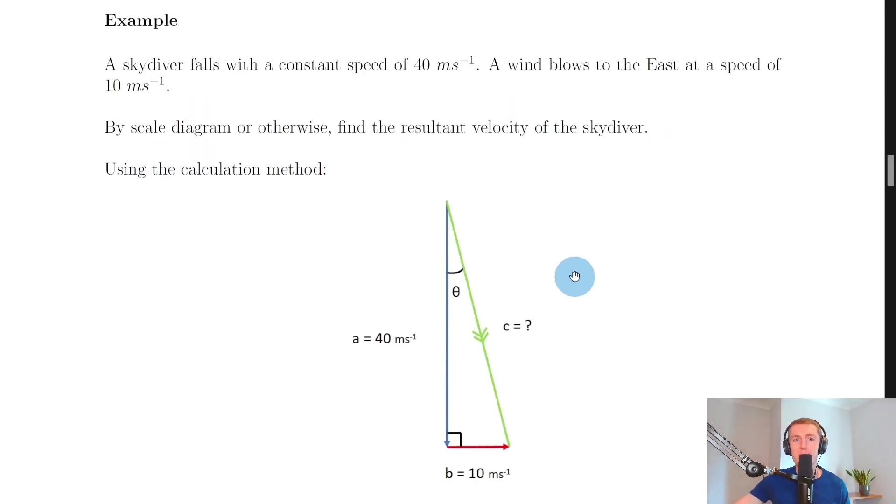So if we look at this example here it says a skydiver falls with a constant speed of 40 meters per second. A wind blows to the east at a speed of 10 meters per second. By scale diagram or otherwise find the resultant velocity of the skydiver.